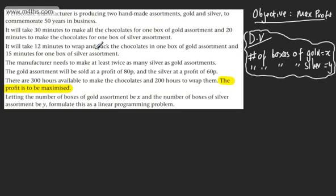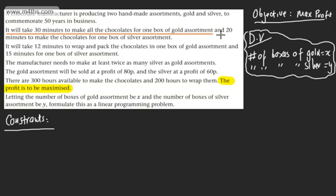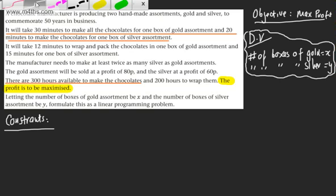What we need to consider now are the constraints. We simply set up some inequalities by getting the information from the text. It takes 30 minutes — half an hour — to make a box of gold, and 20 minutes to make a box of silver. We're told there are 300 hours available to make them, and this will form my first constraint. So the expression for making is one-half x plus one-third y, which must be less than or equal to 300.